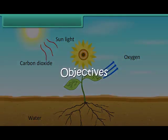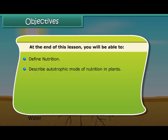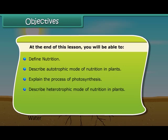Objectives. At the end of this lesson you will be able to: define nutrition, describe autotrophic mode of nutrition in plants, explain the process of photosynthesis, describe heterotrophic mode of nutrition in plants, and explain the different types of heterotrophic mode of nutrition.